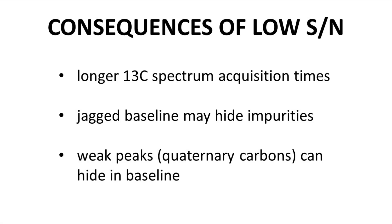One consequence is that C13 spectra take longer to acquire. To minimize noise in the baseline, one normally acquires the same spectrum over and over again and adds the spectra together to get a final spectrum. The random noise tends to average out and get smaller, while the true signal consistently grows. People use this method with proton NMR too, but C13 requires many more spectra, at the cost of taking much longer to acquire.